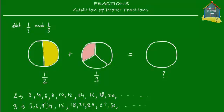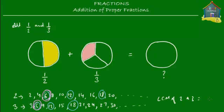Now let's find the common multiples of two and three. The common multiples are 6, 12, and 18. The least common multiple is obviously 6 because it's the smallest. So the LCM of two and three equals six, which tells us we must cut up each pizza into six slices if we want to add the two slices.